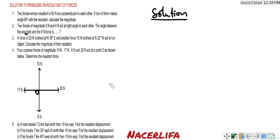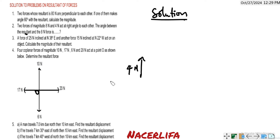If you have two forces in opposite directions, you subtract. If they are in the same direction, you add. The resultant of the vertical forces will be 10 minus 6 = 4 Newton in this direction. And for the horizontal: 20 minus 17 = 3 Newton in this direction.